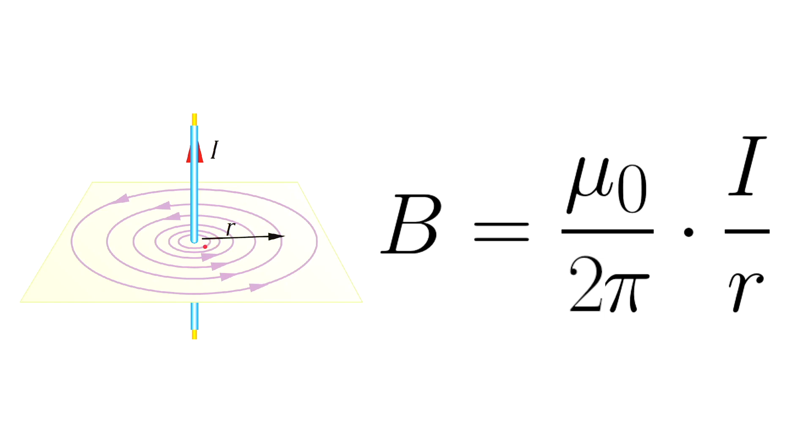Pay attention to the picture. The magnetic field lines near the wire are closer together than those located farther away, where the field is weaker as indicated in the picture. The magnetic field becomes stronger as the radial distance r decreases. So the field lines are closer together near the wire.